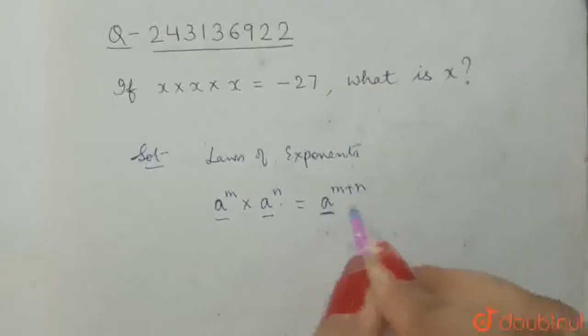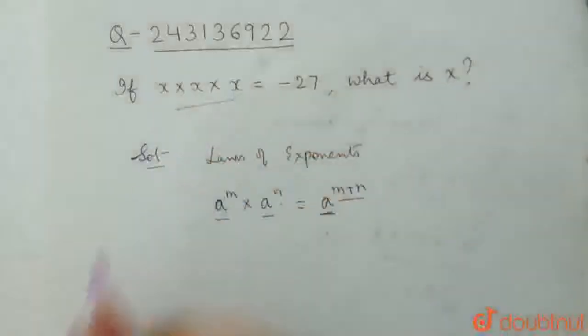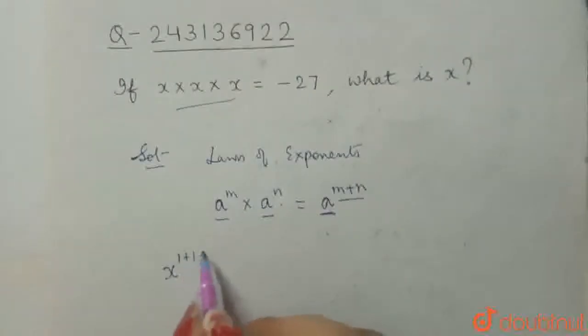that is the base remains the same and the power gets added. So here as well in this expression, x times x times x, that means x raised to power 1 plus 1 plus 1 is equal to minus 27,